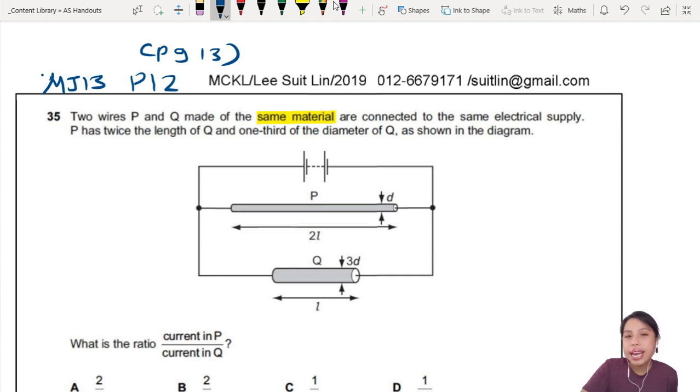Connected to the same electric supply, P has twice the length of Q. Wow. And one-third the diameter. Well, they write here 3D. Okay, good. They write everything labeled for us. It is so nice.